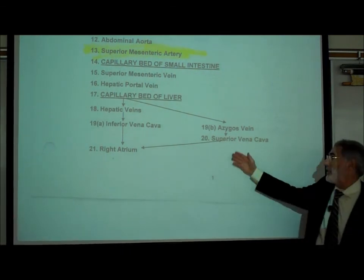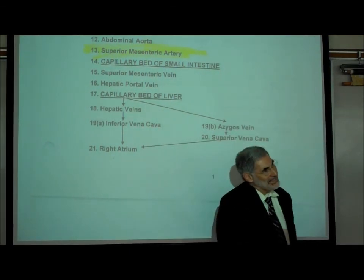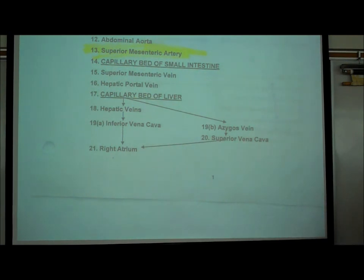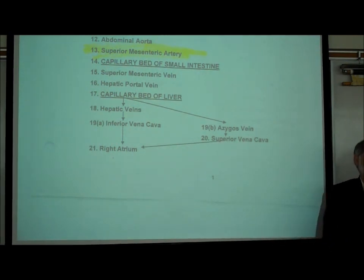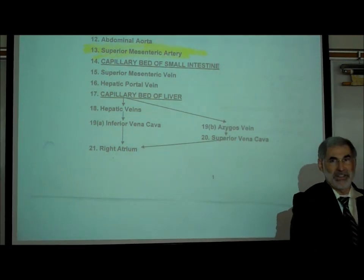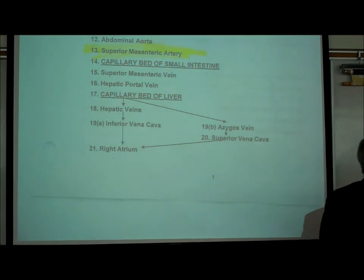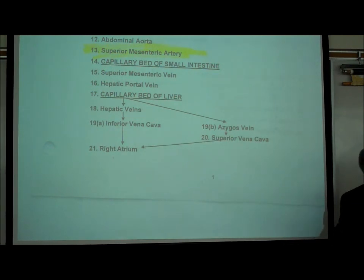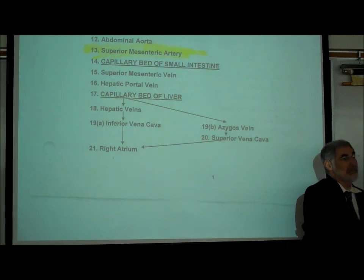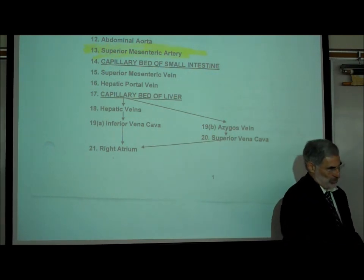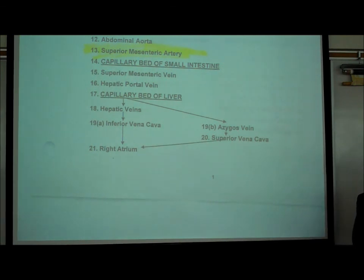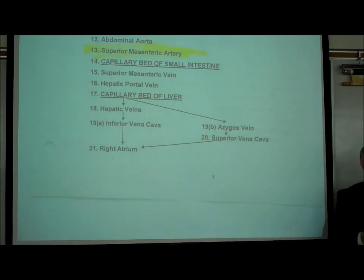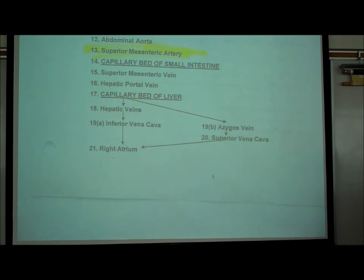The blood always flows through this azygos vein. For those who found it on the cat — it's significant in size, though it may not have been fully injected with blue plastic. It's actually quite sizeable; it wouldn't be mentioned if it weren't visible.